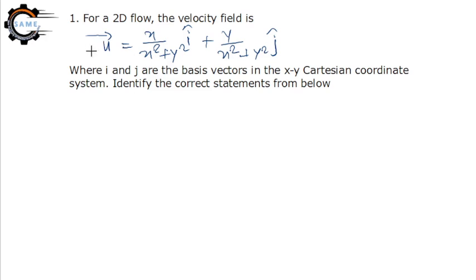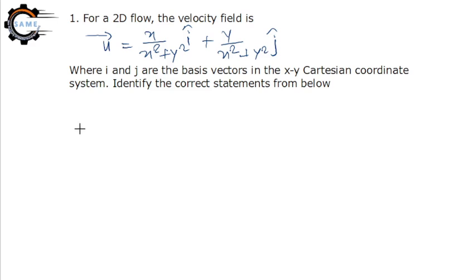See the first question in front of you. Please read the question. For a 2D flow, the velocity field is given as: V = [x/(x²+y²)]i + [y/(x²+y²)]j, where i and j are the basis vectors in the Cartesian coordinate system. You have to check whether the flow is incompressible and whether it is unsteady.